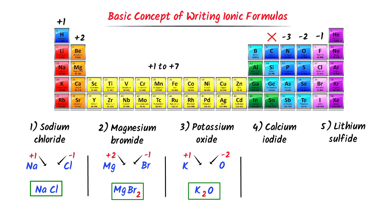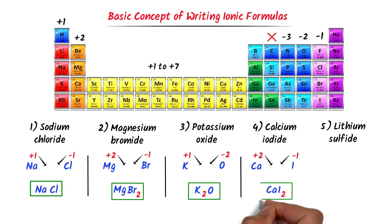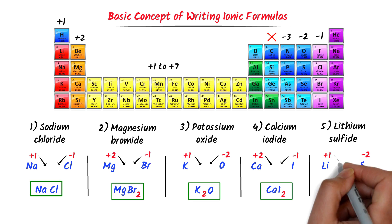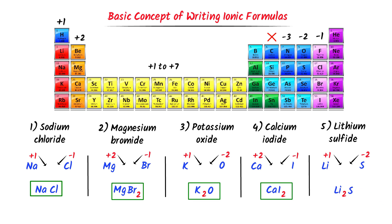In case of calcium iodide, calcium is present in group 2 with oxidation state positive 2, while iodine is present in group 7 with oxidation state negative 1. I cross their respective charges and I get CaI₂. Lastly, in case of lithium sulfide, lithium is in group 1 with oxidation state positive 1, while sulfur is in group 6 with oxidation state negative 2. I cross their charges and I get Li₂S.